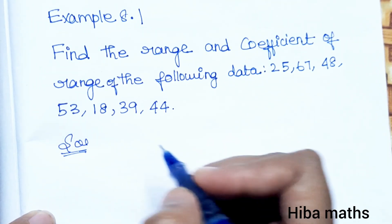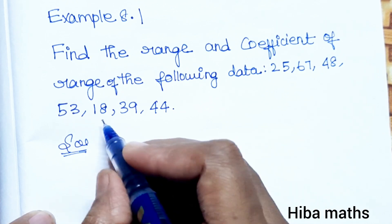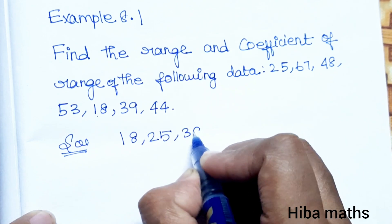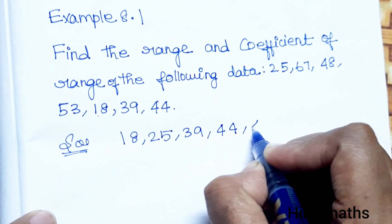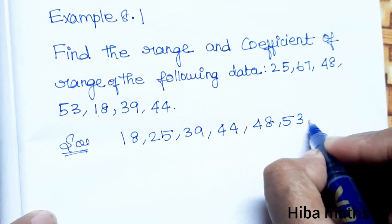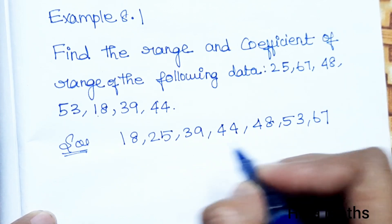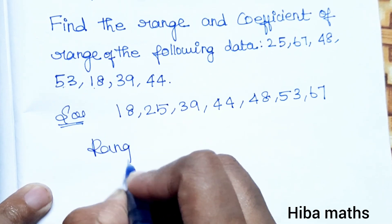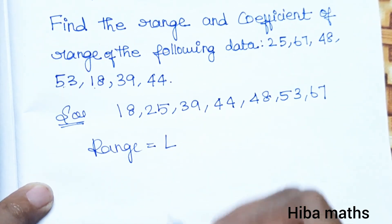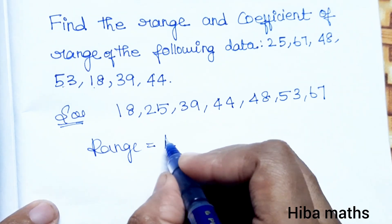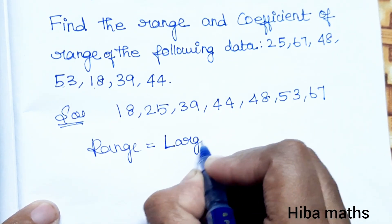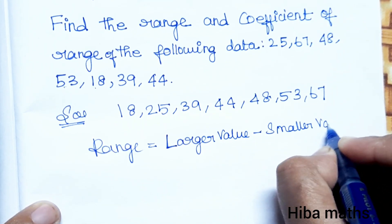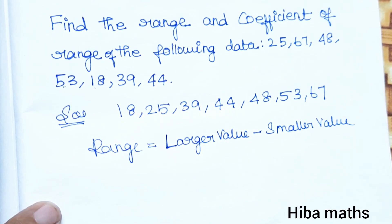We will try to get the range of the following data. The formula for range is: larger value minus smaller value. So, range equals L minus S.